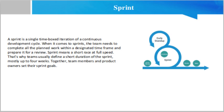Team members and product owners set their sprint goals, and as soon as this race starts, the team works tirelessly to finish the planned work and prepare it for a review. Sprint planning is the beginning of the sprint process. The development team, scrum master, and the product owner all participate during this stage. The scrum master will provide data on the team's most recent and average velocity during this meeting.